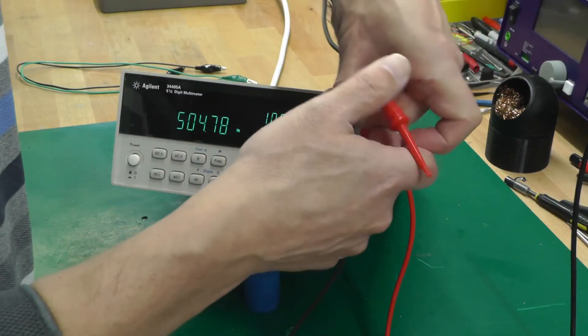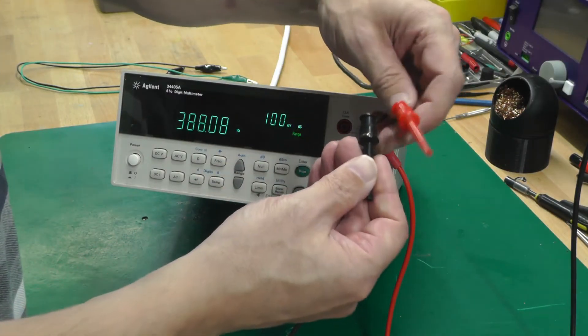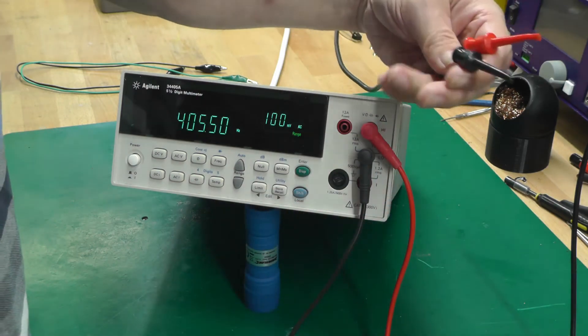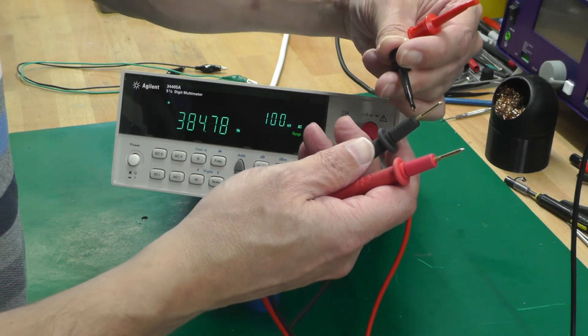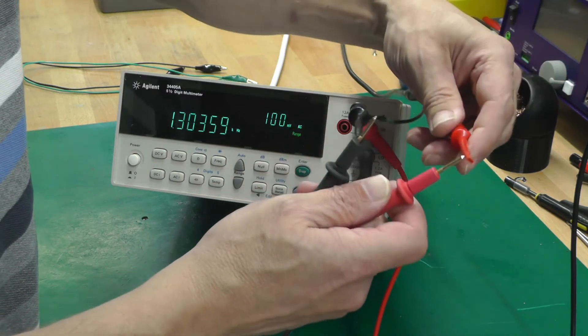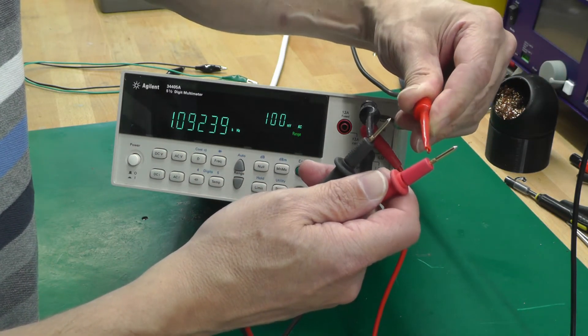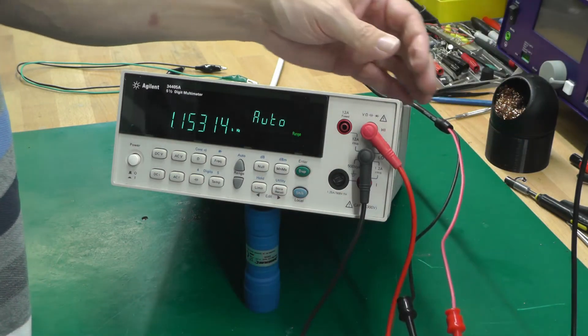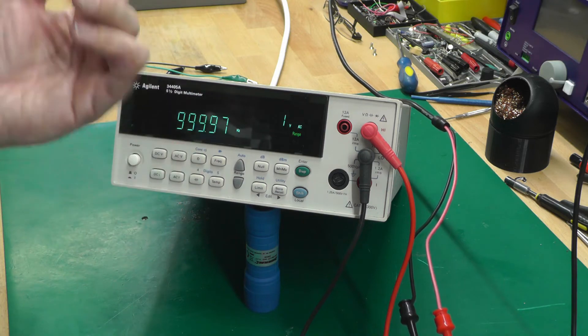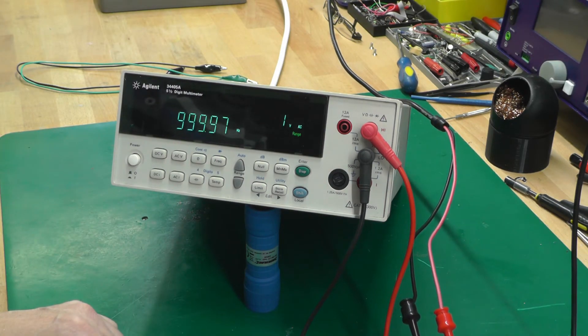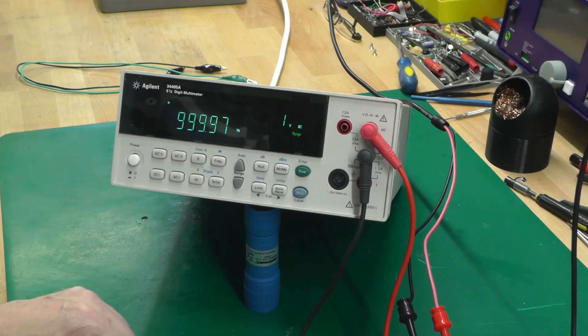Okay, I've got my function generator hooked up off camera. This is it here, and I've set it for square wave, one kilohertz, 50 percent duty cycle. Yes, 999 hertz. So perfect, frequency mode is working great.